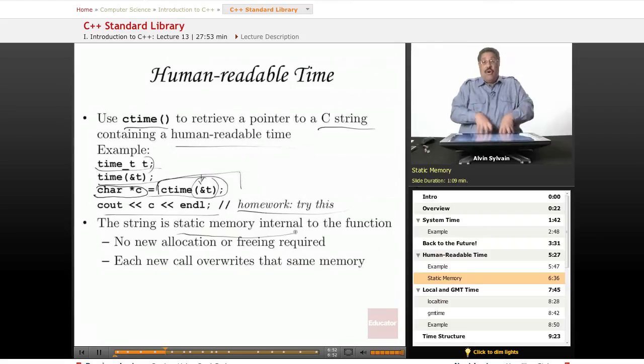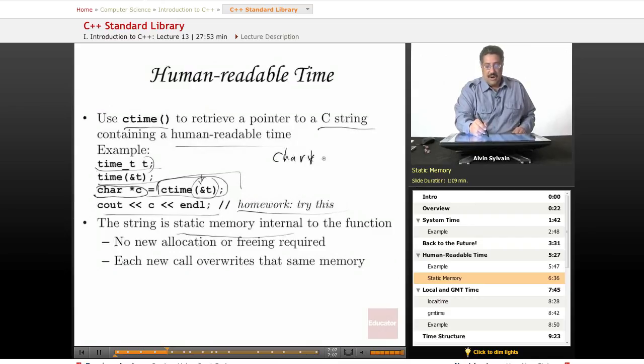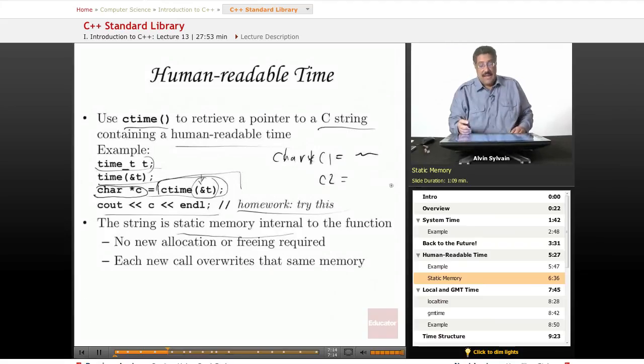So if you need to get current time and then save it, and then some seconds or minutes or weeks or days later, you need to call it again, you'll need to call it and save it in a separate location. So you'll need like a char c1 to get the time. And then minutes later, you can have char c2 and get the time again.